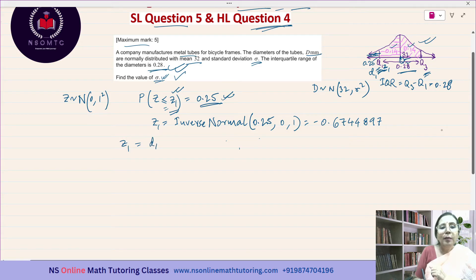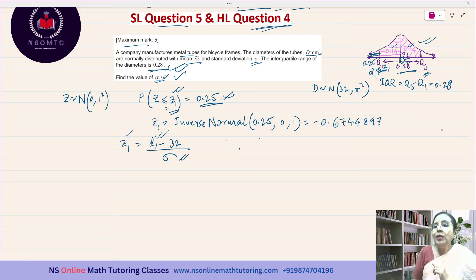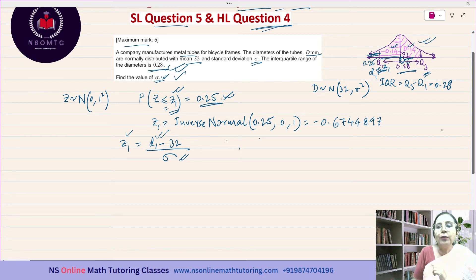Now we have to get the sigma value. I know the relation between the z distribution and d. d is a normal distribution variable with mean 32 and standard deviation sigma. So z1 = (d1 - 32) / sigma. I know the value of z1, so if I know the value of d1 then I can get the value of sigma.